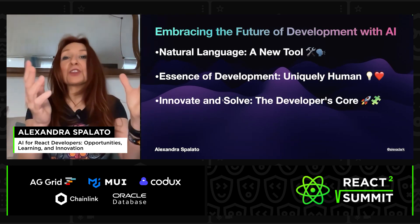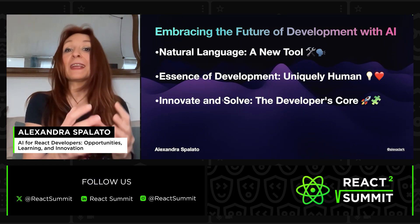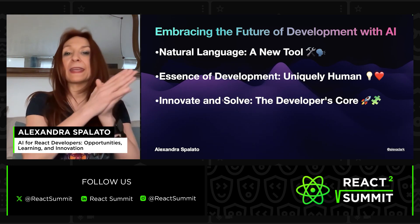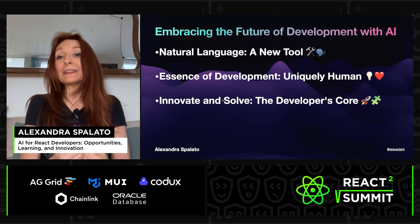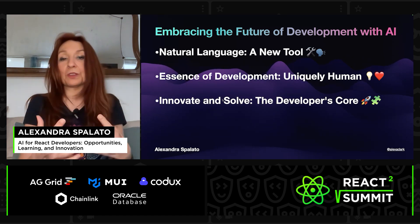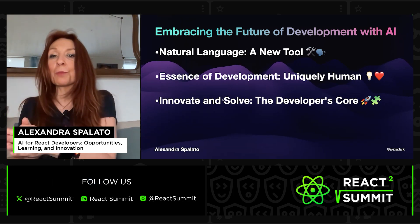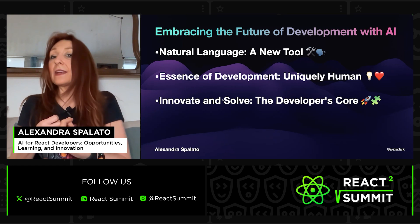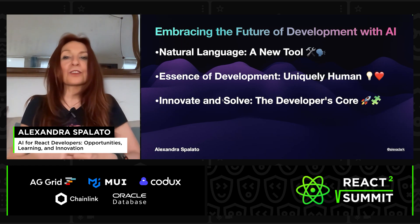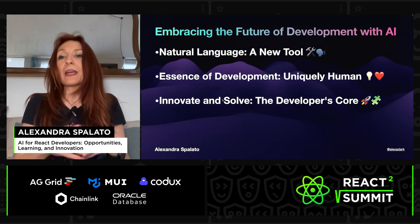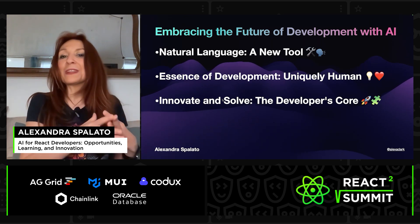In conclusion, natural language is emerging as a new tool of our trade. But let's not forget, the essence of being a developer cannot be replicated by AI. Our ability to understand deeply, innovate bravely, and solve problems creatively is what makes us uniquely human. So as we embrace AI, remember that it's not a replacement, but a supplement to our human capabilities. As React developers, you can totally learn these skills and continue to push the boundaries of what's possible by learning to code with AI and learning to use it to build applications.